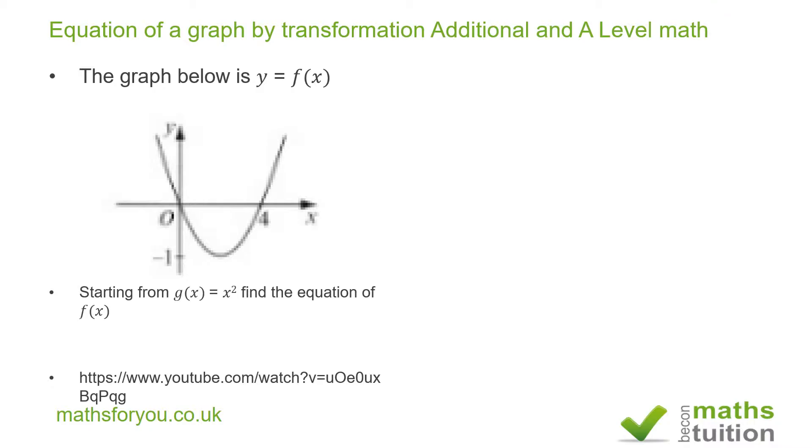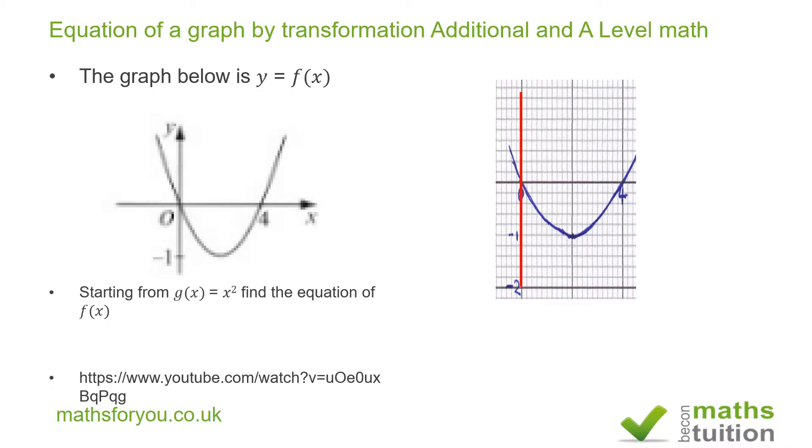Hello and welcome to this exercise on finding the equation of a graph by transformation, an IGCSE additional mathematics and A level type question here. This is the second part of a question sent to me by one of my subscribers. It says the graph below is y equals f(x), and it says starting from g(x) equals x squared, find the equation of f(x).